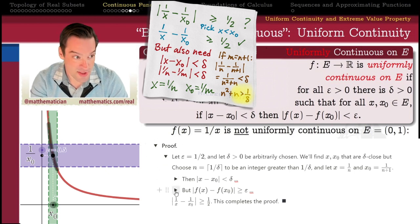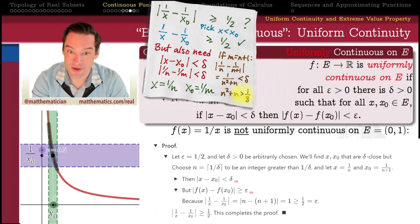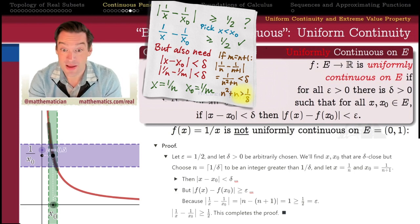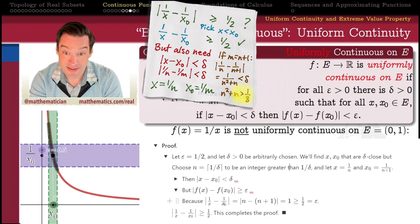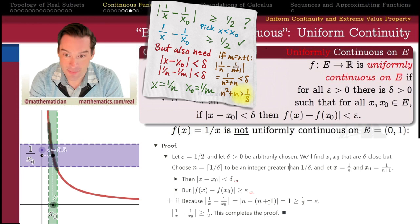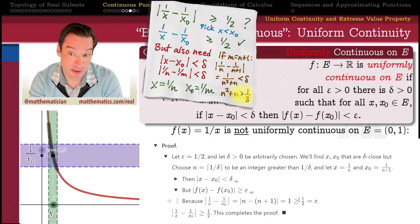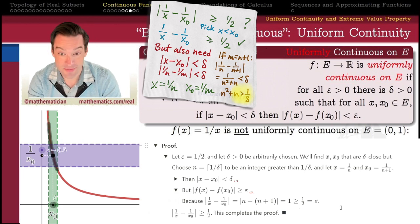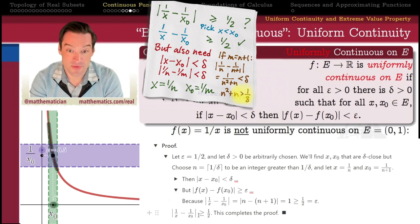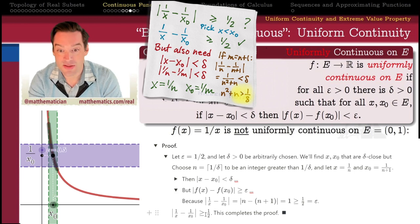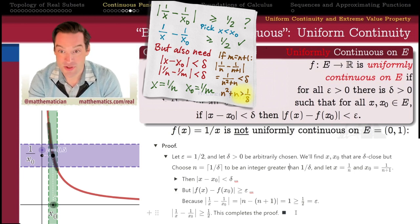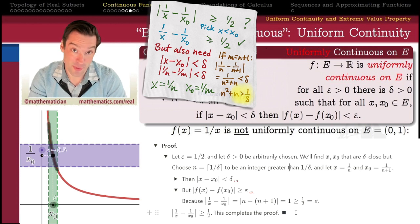Using the top half of the cocktail napkin, we can also guarantee why the images f(x₀) and f(x) are epsilon-separated. Because the images 1/x and 1/x₀ are the integers n and n+1, and the integers n and n+1 are separated by a distance of 1, which is greater than or equal to 1/2 — the epsilon we selected. Therefore the images f(x) and f(x₀) are separated by at least epsilon, which completes the proof that this function is not uniformly continuous on the open interval from 0 to 1.